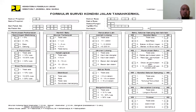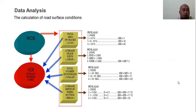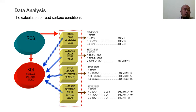This form is used for asphalt and rigid pavement surveys, and a separate form is used for soil and aggregate pavement. It works the same way — just check the condition. For data analysis, the comparison of road surface condition uses four parameters that contribute to the SDI value.